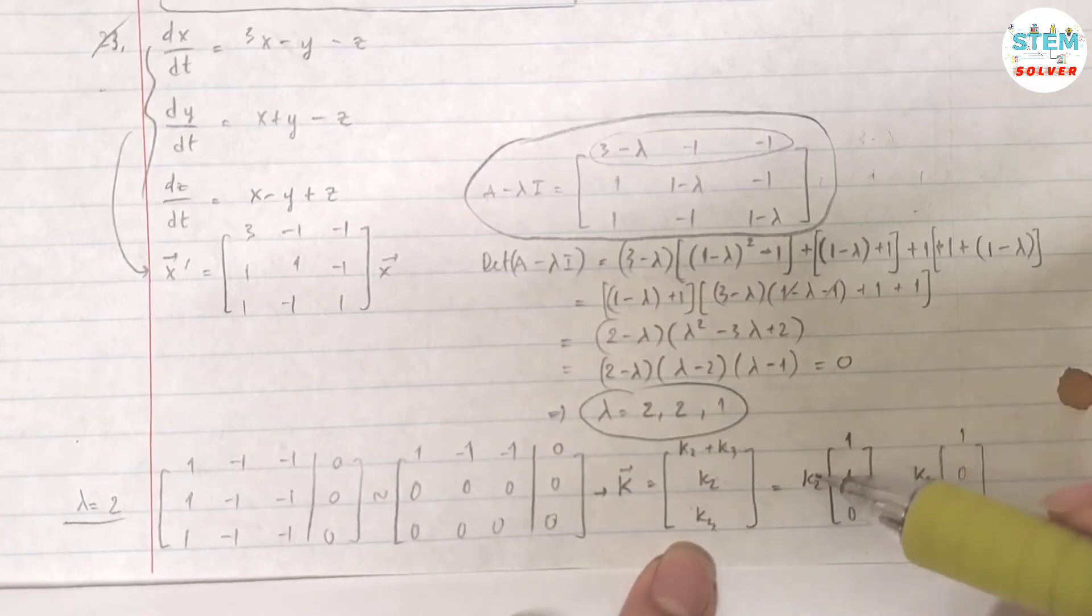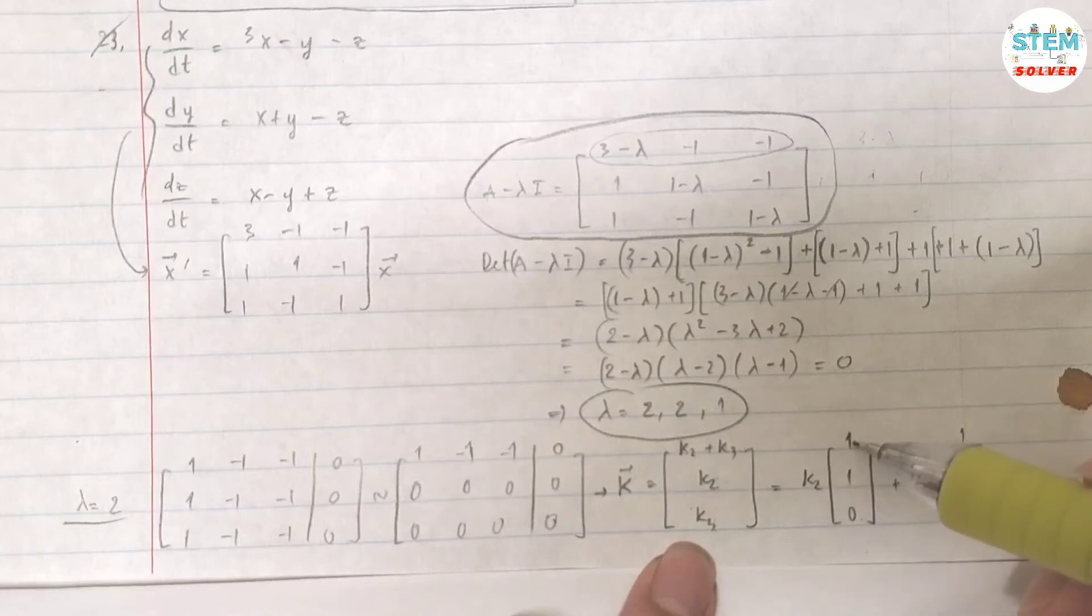So to double check, you can distribute this in and then add them together. So if I distribute this I have k2 plus k3 for the first row, second row k2 plus 0 which is k2, third row 0 plus k3. Now from here, as you can see, you have this matrix and this matrix, and since they are not a multiple of each other, you have 2 linearly independent solutions.